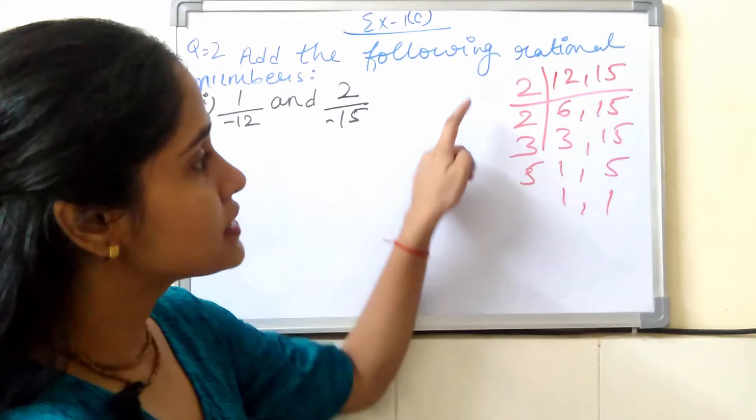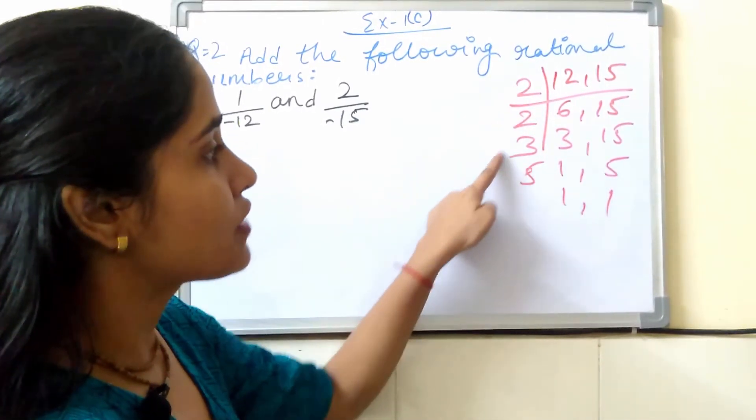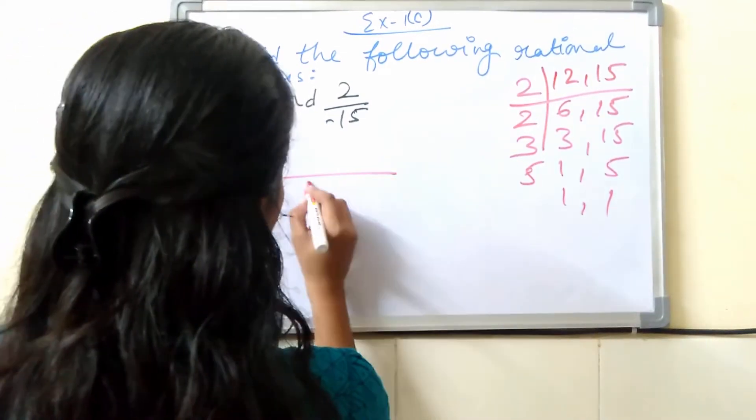So, multiply it. 2, 2s are 4. 4, 3s are 12. 12, 5s are 60. So, your LCM is 60.